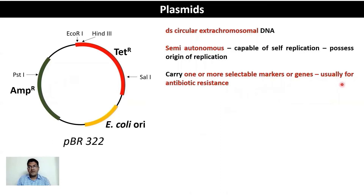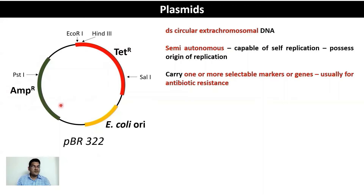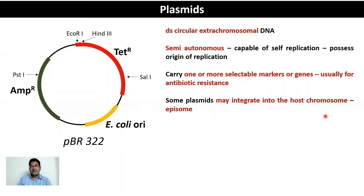Plasmids carry one or more selectable markers or genes, and usually these are antibiotic resistance genes. In the case of pBR322, there are two resistance genes: tetracycline resistance and ampicillin resistance. Any E. coli containing the pBR322 plasmid would be both tetracycline resistant and ampicillin resistant.